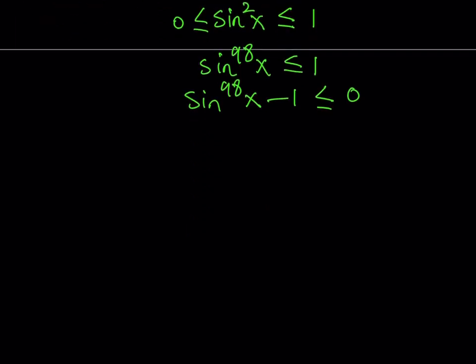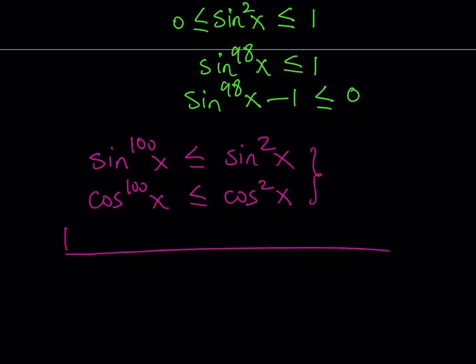So, now I have that sin^100(x) is less than or equal to sin²(x). I also have that cos^100(x) is less than or equal to cos²(x). Great. Now, what do we do with these inequalities? We add them. Why? Because we know that sin²(x) + cos²(x) is equal to 1. So, I want to be able to use this identity. So, let's go ahead and add these and see what happens.